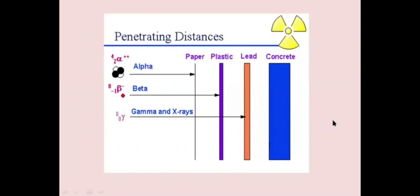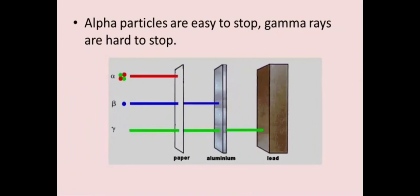This picture compares the penetration power of alpha, beta, and gamma rays. Alpha can be stopped by even a sheet of paper — it has the least penetrating power. Beta can be stopped by a sheet of plastic or a 1 cm thickness aluminum sheet, having more penetrating power than alpha. Gamma can be stopped only by a 5 cm thick sheet of lead or concrete of many meters thickness, as it has the highest penetrating power. Alpha particles are easy to stop; gamma rays are hard to stop.